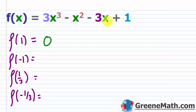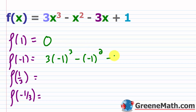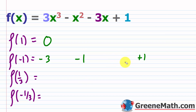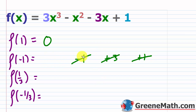Testing f(−1): 3(−1)³ − (−1)² − 3(−1) + 1 = −3 − 1 + 3 + 1 = 0. So f(−1) = 0, confirming that −1 is also a zero.